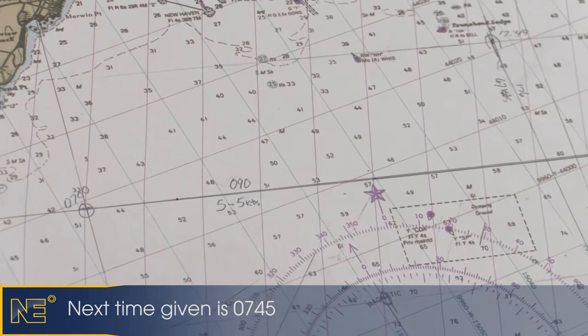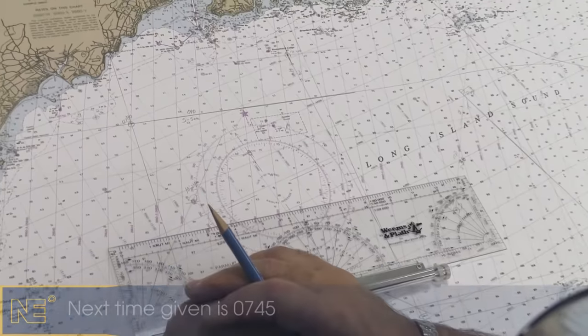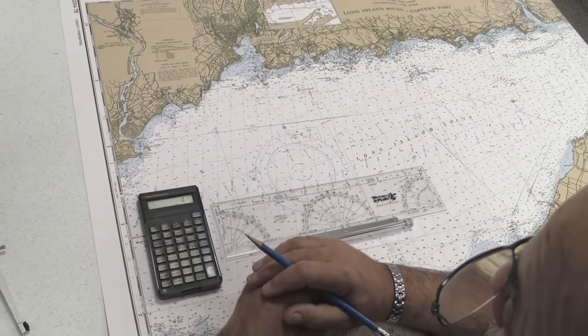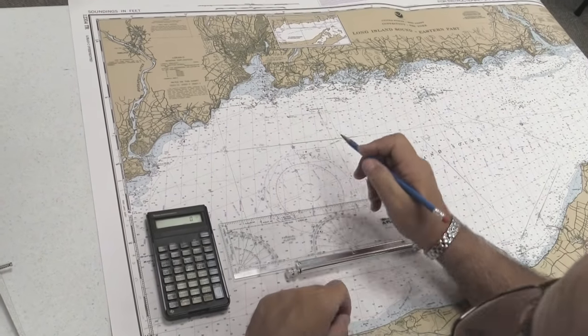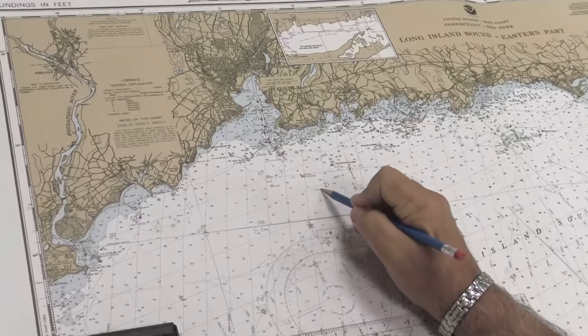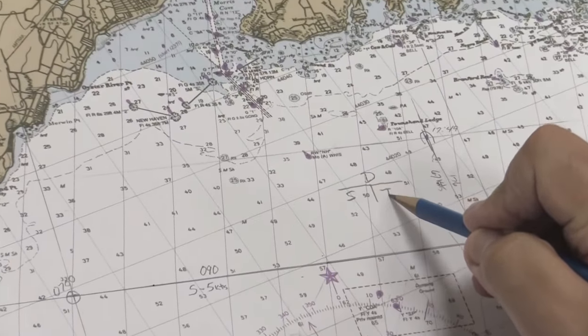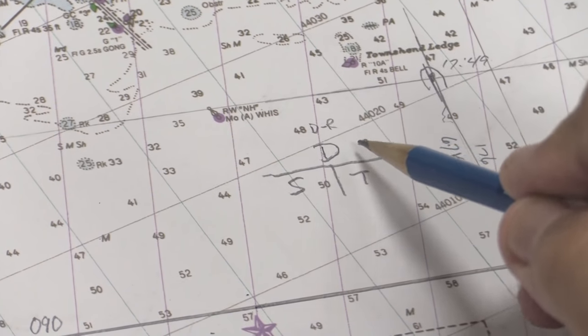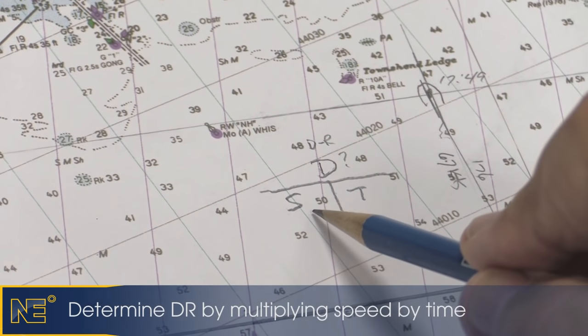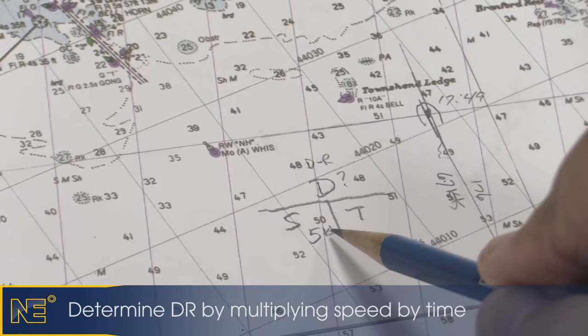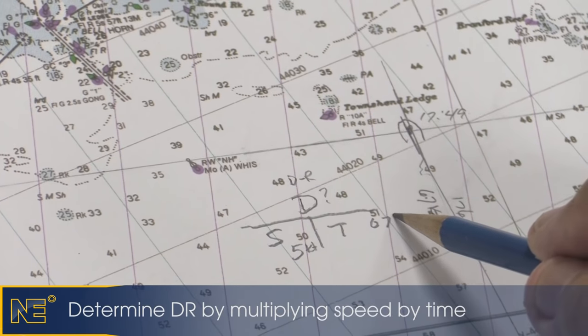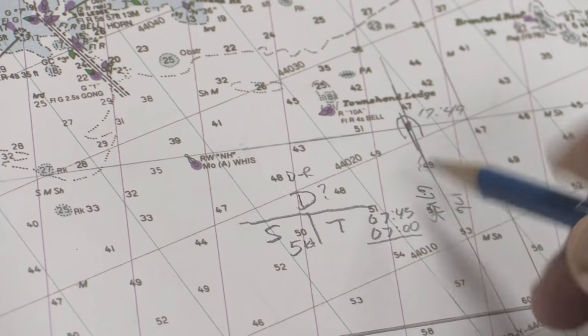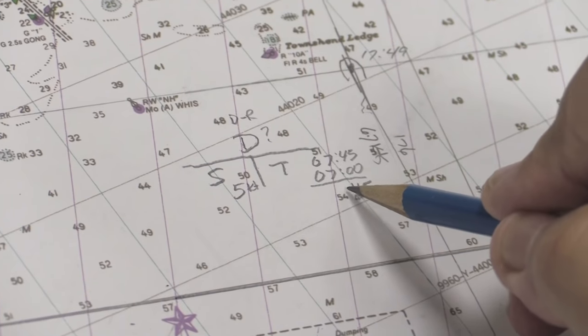The next time given to us is 0745, so we need to determine where we would have a dead reckoning, where we think we should be at 0745. So we need to do a distance, speed, and time problem to determine our DR. Our time is 0745 for our new position and 0700 for our departure. We do that math, we find out that 45 minutes has been underway.